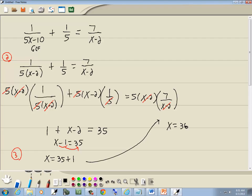And 35 plus 1 gives us 36. Now we need to check to make sure this doesn't cause 0 in a denominator. It's a pretty good bet that it won't. But if we plug 36 in here, 5 times 36, I don't know what that is. It's like 150 something, minus 10, that's not 0. If I put 36 here, 36 minus 2 is 34, that's not 0. We don't care what it's equal to, we just want to make sure it doesn't equal 0. So that would be our answer.